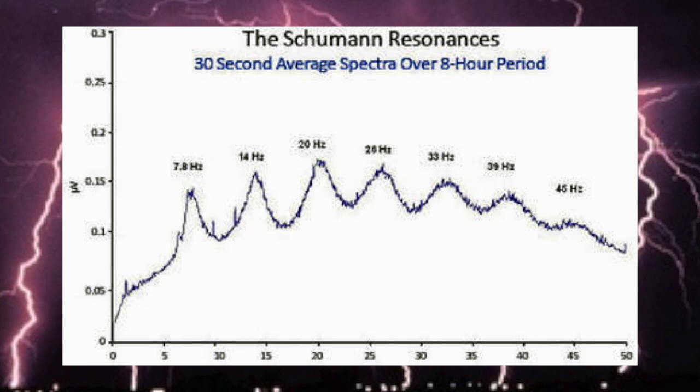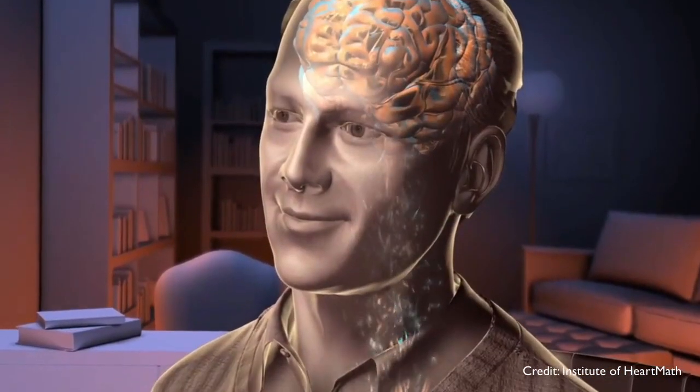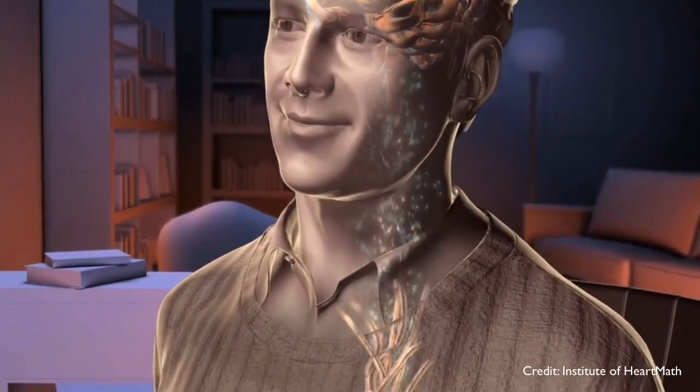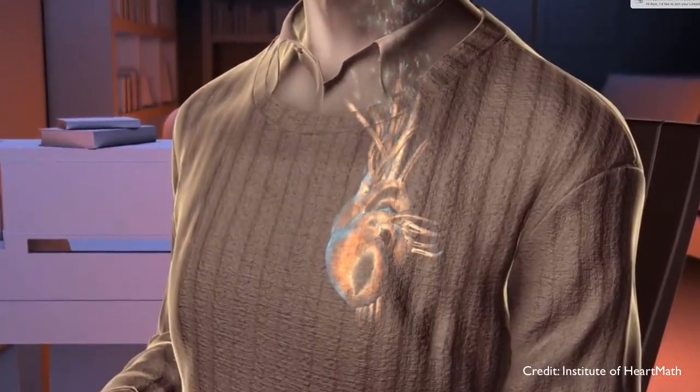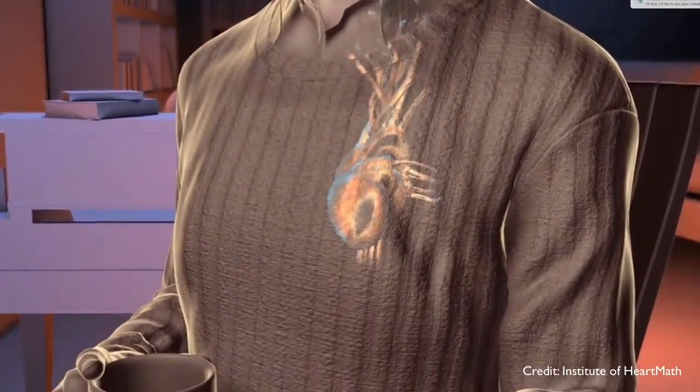So the Schumann resonances are really between this 0 to 30 Hz range. And you can even see from this graph here, there's a couple little spikes below 5 Hz even. But it mainly starts at 7.83 and then goes on up. This frequency range is the frequencies of the brain, what the cells respond to, what the tissues are ideally healed, and even the frequencies we emit.